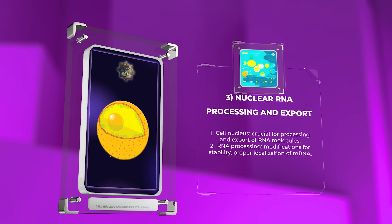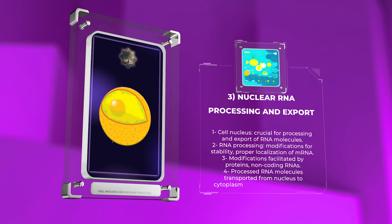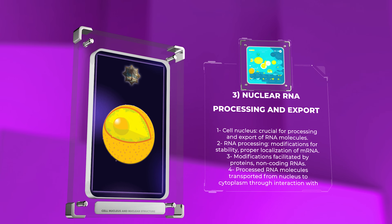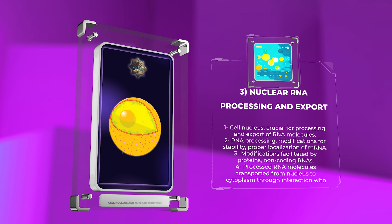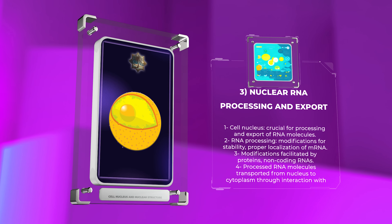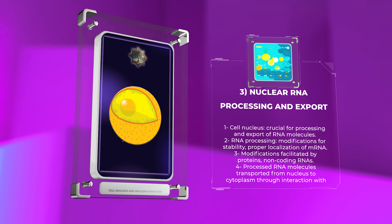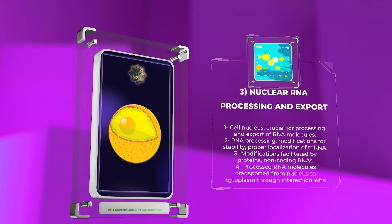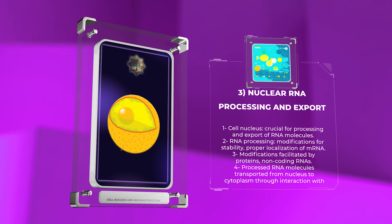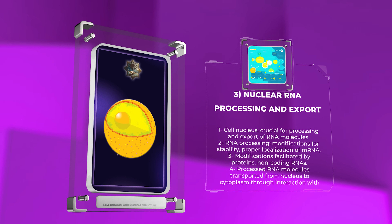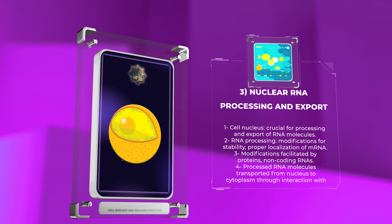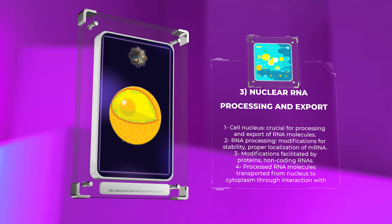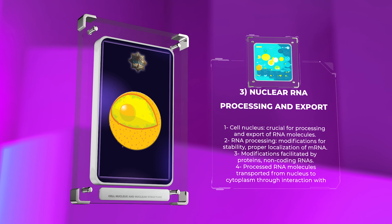The cell nucleus plays a crucial role in the processing and export of RNA molecules, which are essential for gene expression. RNA processing involves modifications that ensure the stability and proper localization of mRNA transcripts. These modifications are facilitated by proteins and non-coding RNAs. Once processed, RNA molecules are transported from the nucleus to the cytoplasm through interaction with nuclear export factors. This ensures accurate and timely export for translation.